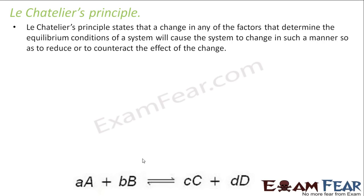It says that if a system is in equilibrium, for example I have a system in equilibrium where A plus B are my reactants and C and D are products, if I change any of the factors that determine equilibrium, I'll talk about the factors which determine equilibrium, for example pressure, temperature, volume.